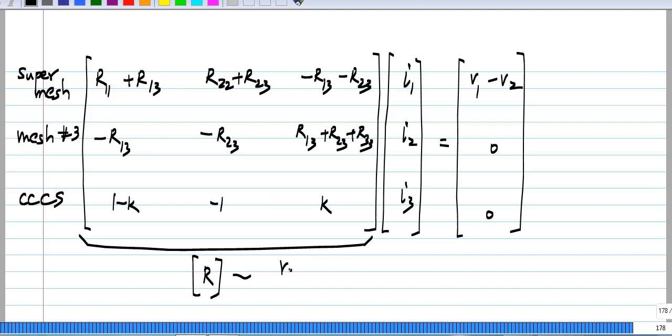But you realize that this has both resistances and dimensionless constants. So these entries are all resistances, and these entries are dimensionless constants. So as I mentioned earlier, this is analogous to the case of nodal analysis with a voltage controlled voltage source. So please go back and look at that case, and understand the similarities between these two.